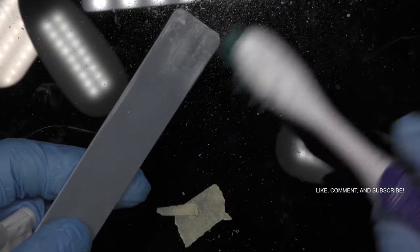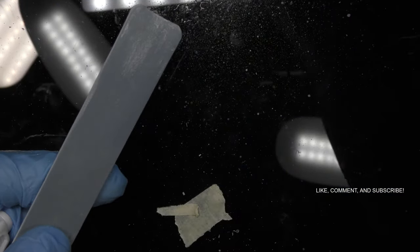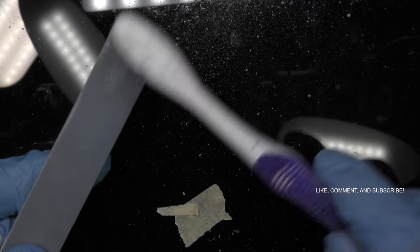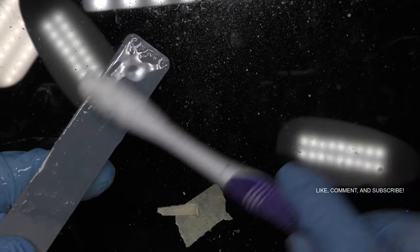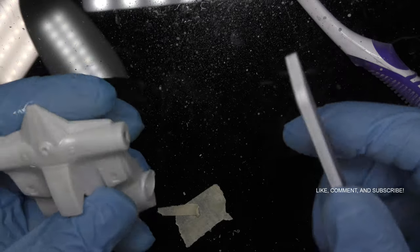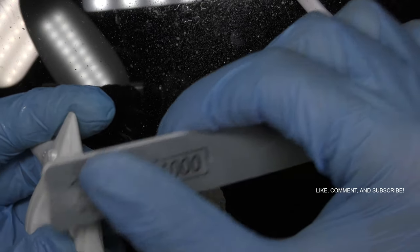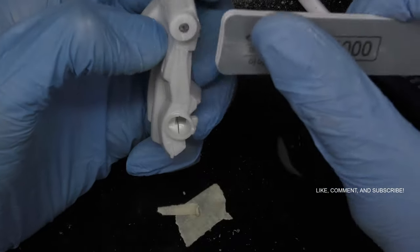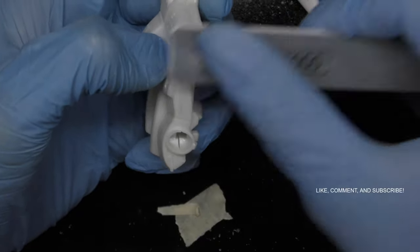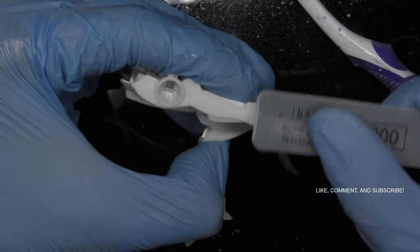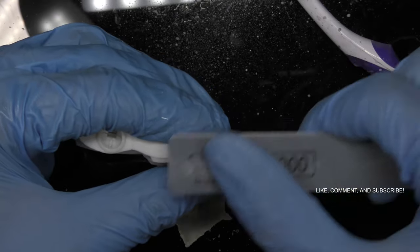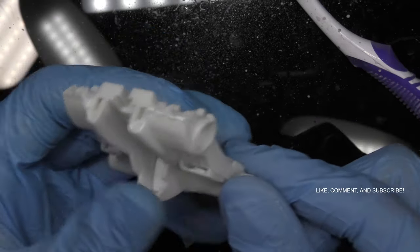And then once again, going to attack it with the 1000 grit flat sanding stick, always making sure that we are wet sanding. And well, you guys, that's pretty much it for my process. All I do is I go over it with a 4000 polishing block to make it nice and shiny and squeaky and ready for paint. Very smooth surface. That's all I have to say.